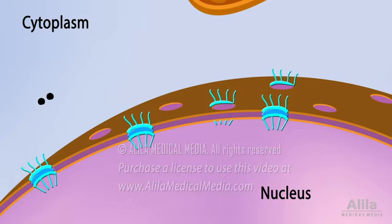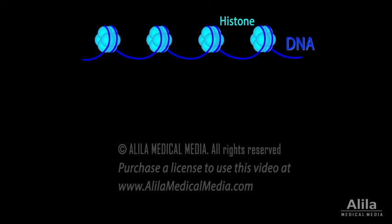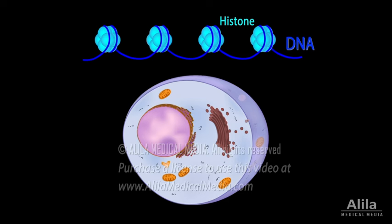Chromosomes are strands of DNA wrapped around proteins. Under a light microscope, chromosomes are only visible during cell division when they are highly condensed. The most prominent feature of the nucleus is the nucleolus, the area around the clusters of ribosomal RNA genes. This is where ribosomal RNAs are made and where ribosomes are assembled, before moving to the cytoplasm for protein synthesis.